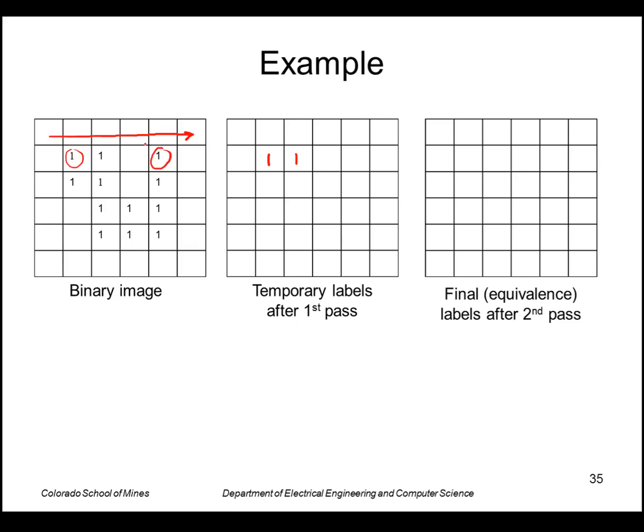When I get over to here though, I don't have any new labels up into the left, so I make a new label called two. So next row I continue the ones, continue the two.